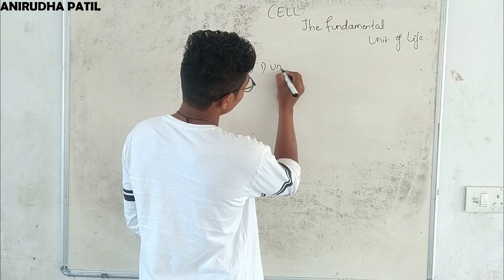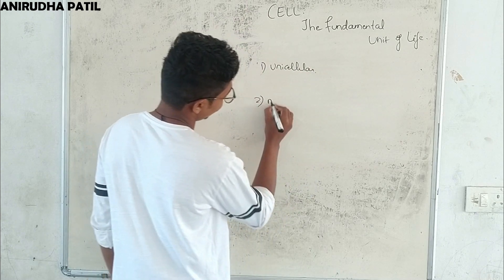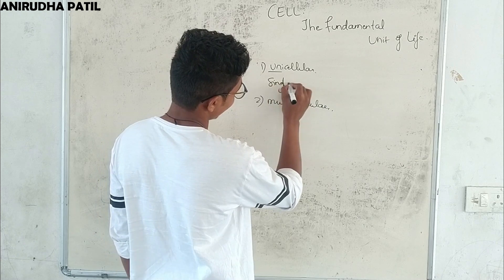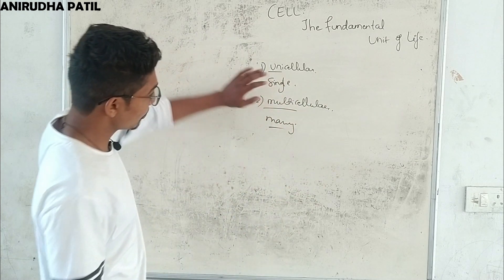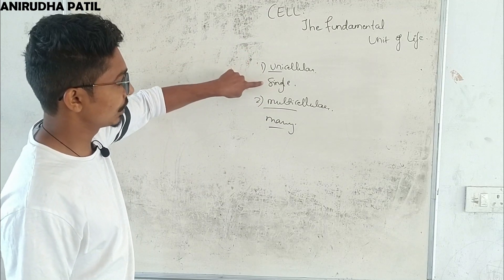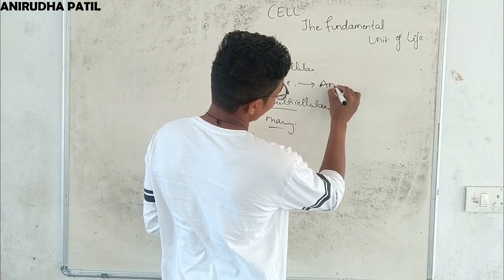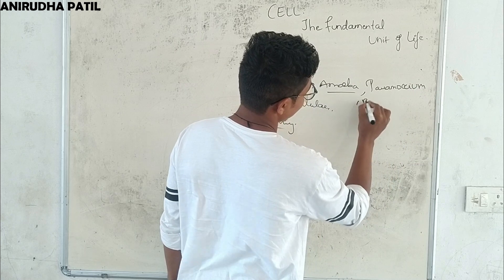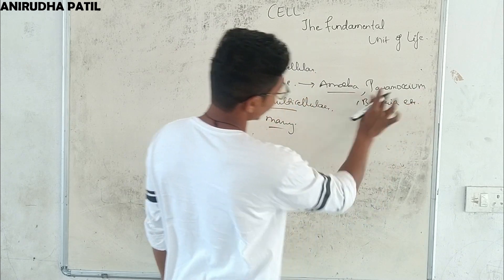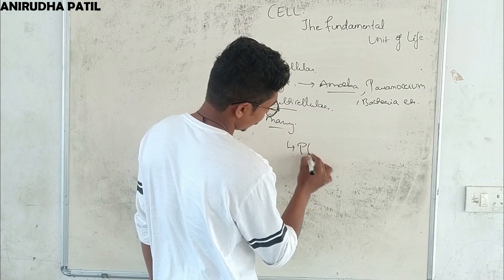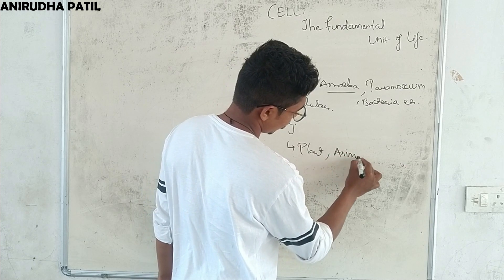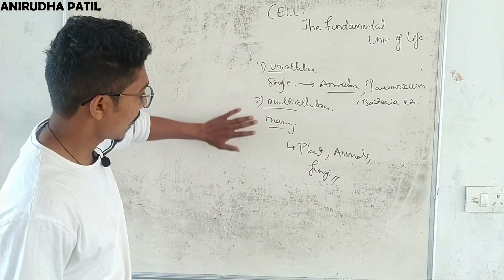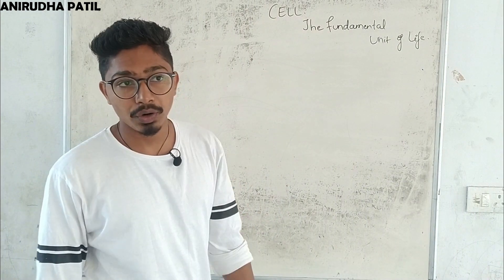As you all know, every organism is composed of cells. There are two kinds: unicellular and multicellular. 'Uni' means single and 'multi' means many. Unicellular organisms are composed of a single cell — for example, amoeba, paramecium, and bacteria. Multicellular organisms include every plant, animal, fungi, etc.